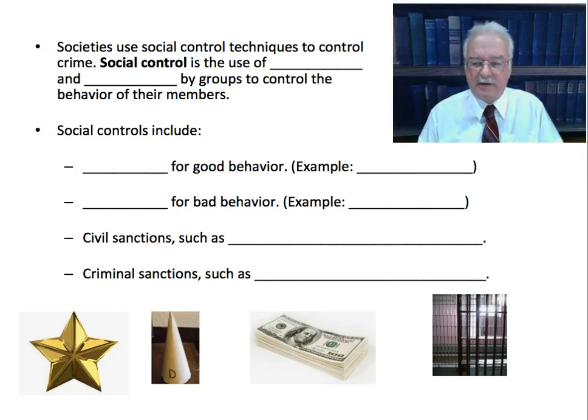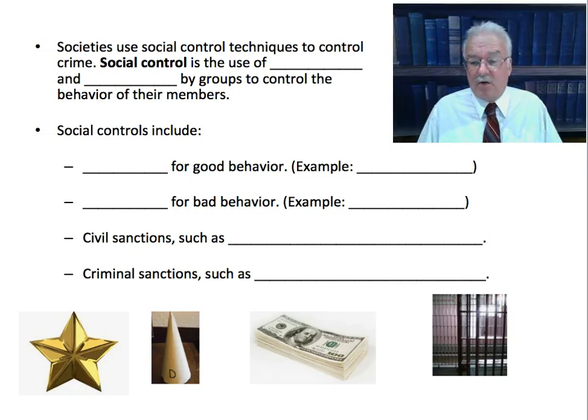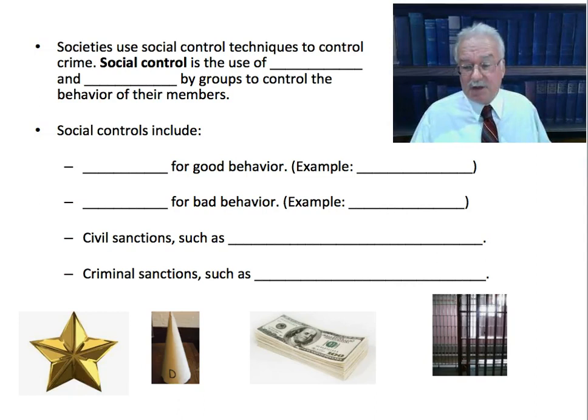Think back to when you were in elementary school. If you got an A on a test or won the spelling bee, the teacher would often reward you — by putting a star on your collar or your name on the board as the top speller. That's a reward for good behavior, given to recognize it and encourage it in both that person and others. But there are also sanctions for bad behavior: if you were bad in school, it might be a time-out or being excluded from a play activity.